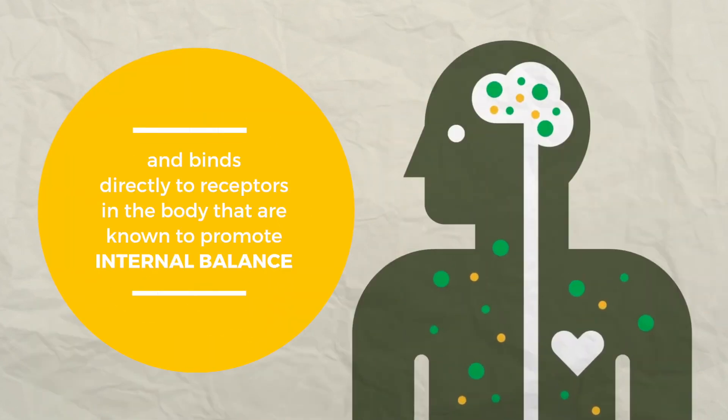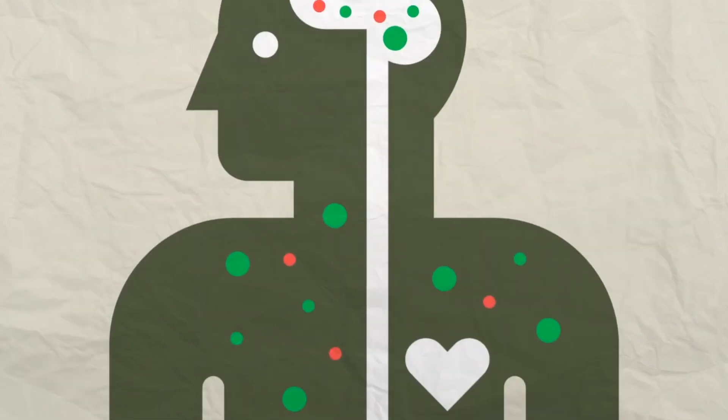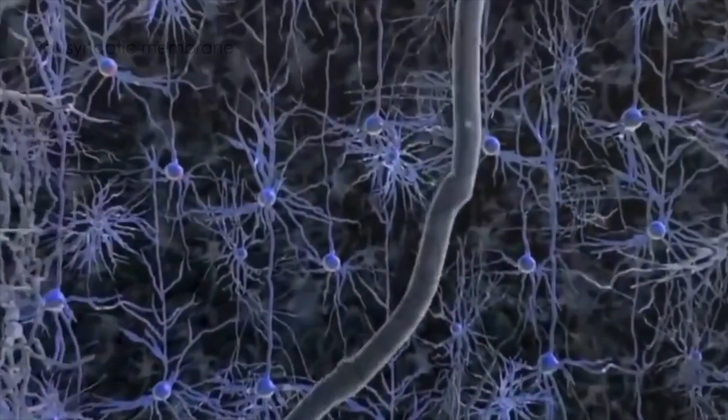The ECS consists of cannabinoid receptors, endocannabinoids, and enzymes. Endocannabinoid receptors are designed to accept cannabinoids and are responsible for internal communication within the body. They receive signals and initiate vital biological responses.